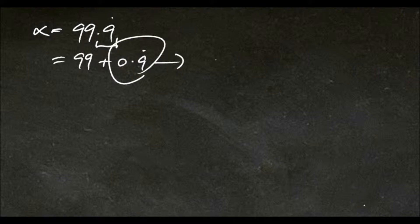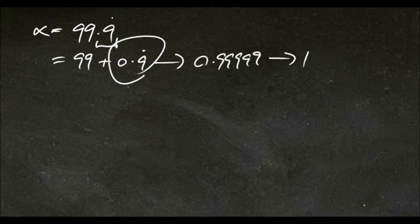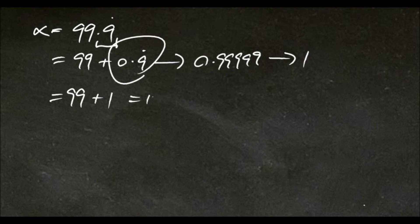But by definition, 0.9 repeater, which is 0.99999, is close enough to 1. So we'll just write this as 99 plus 1, and that's just 100, or 100 over 1.